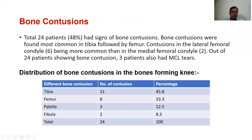Bone contusions. A total of 24% of patients showed signs of bone contusions. Bone contusions were found most commonly in the tibia, followed by the femur, with contusions in the lateral femoral condyle being more common than the medial femoral condyle. Distribution of bone contusions among the bones forming the knee: tibia most common, followed by femur, patella, fibula, and fibula.